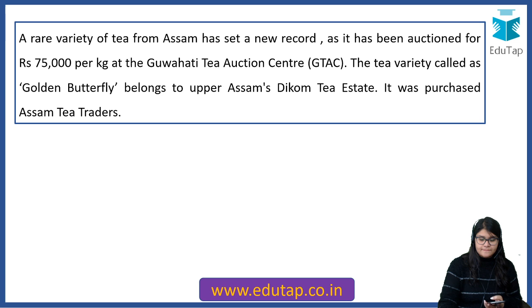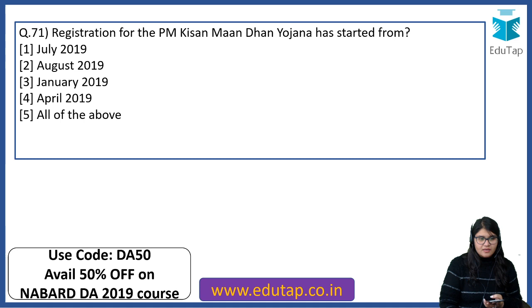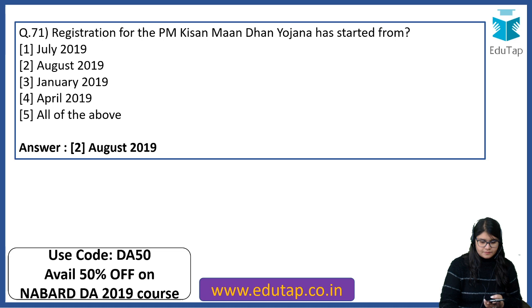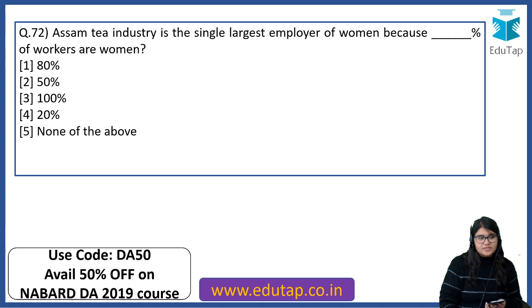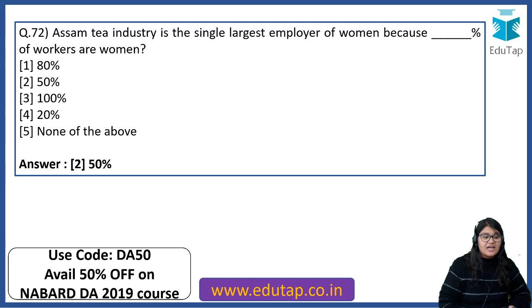Registration for PM Kisan Mandhan Yojana has started from when? The answer is August 2019. Assam tea industry is the single largest employer of women because 50% of workers are women — that is why it is the single largest employer of women in the tea industry.